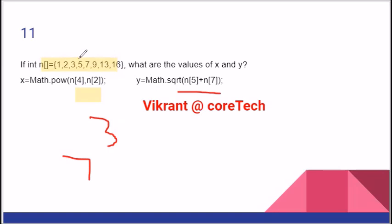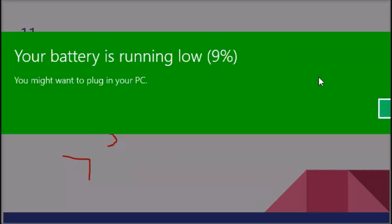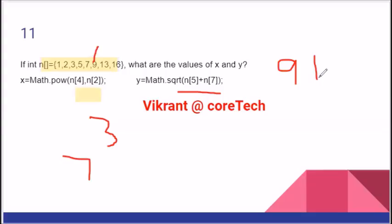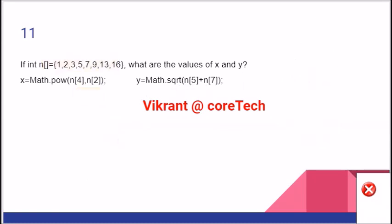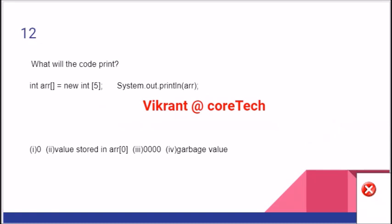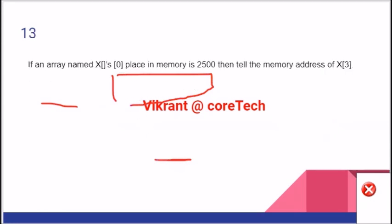Array index 5 is 9 and index 7 is 16. So 16 plus 9 is 25. So a very logical output will come in these kinds of cases. Remember, you need to pass 0 because of Math.sqrt. If we print an array directly with no values assigned, it means this will be a garbage value.